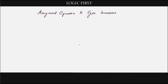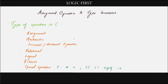Welcome to Logic First. In this video, let's learn about assignment operator and type conversion in C language. An operator allows us to perform some operation on either constants or variables. There are different types of operators in C language, and in this video we will be learning about the assignment operator. In later videos we can learn about other operators.